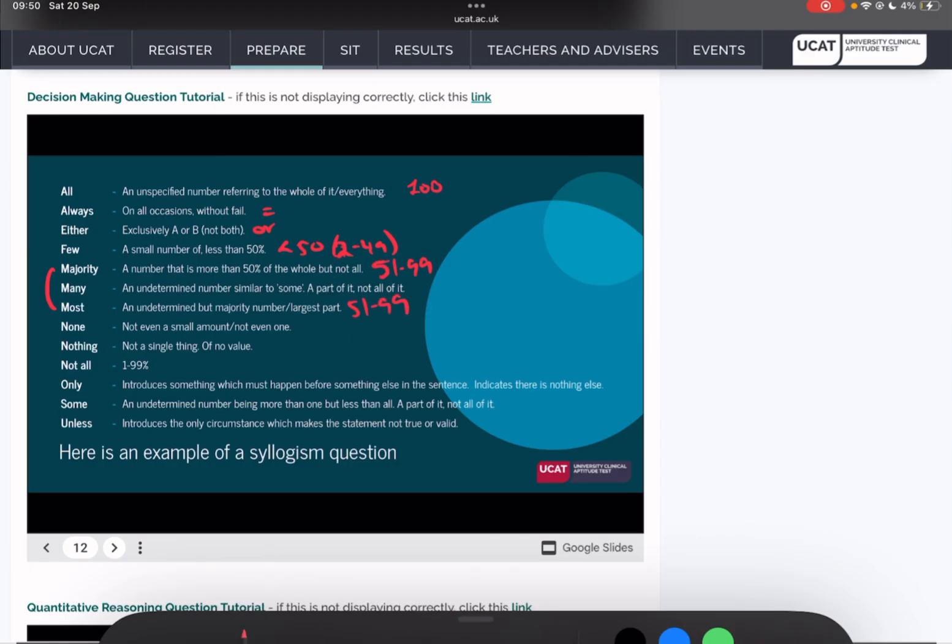Many, an undetermined number similar to some, a part of it, not all of it. Many is similar to some. Let me change my color. Many and some mean the same thing, so we'll get on to that in just a second.